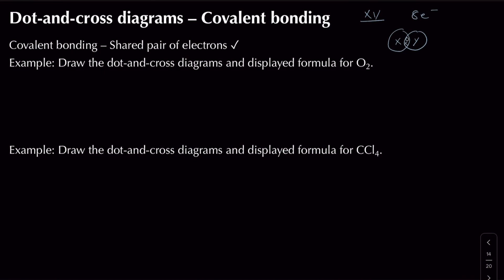We use dots to represent electrons from atom X and crosses to represent electrons from atom Y. In total, each atom ends up with 8 electrons in its outer shell — stable and happy — even though one of those electrons is shared with the other atom. You also need to be aware of outliers to the octet rule.